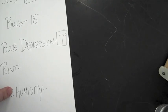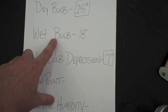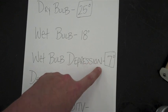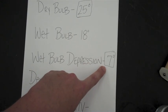What you're going to do is take your dry bulb and your wet bulb and subtract them. That's going to give you your wet bulb difference. In this case, we have a difference of seven degrees.